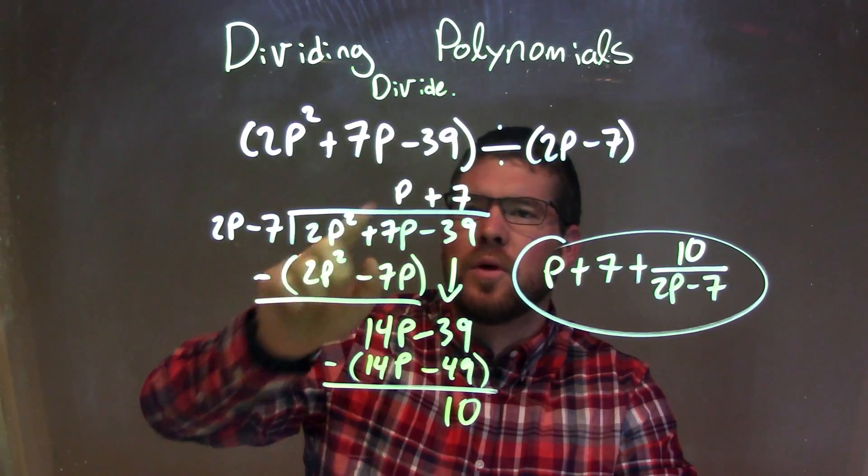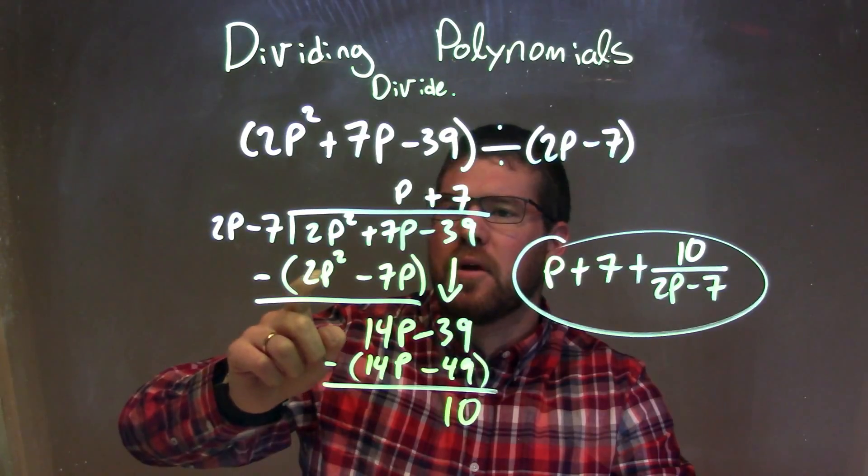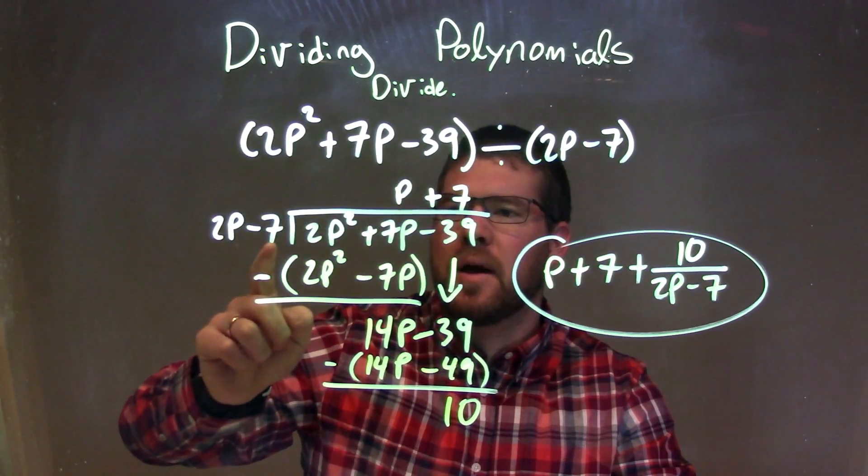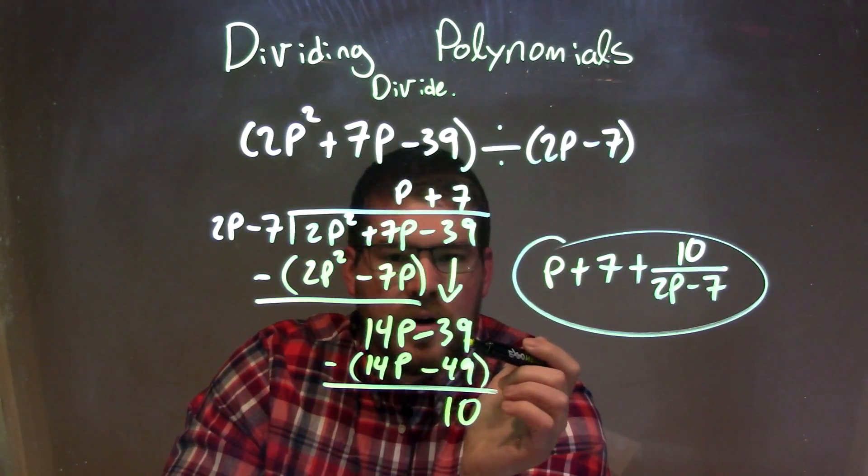And I said, what times 2p gives me 2p squared? Just p. And multiply p by 2p to get 2p squared here. And by minus 7, you get minus 7p. I subtracted them and got 14p. I brought down the minus 39.